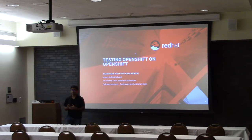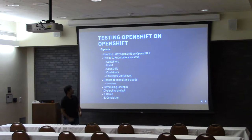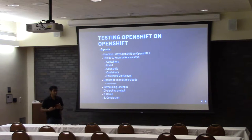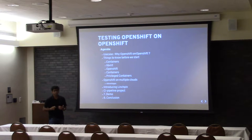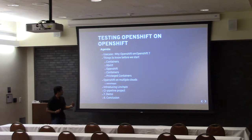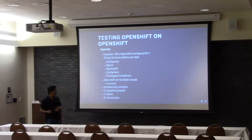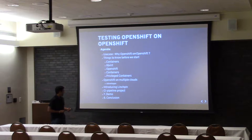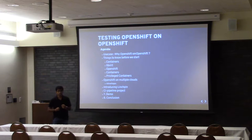CI Pipeline is part of the CentOS PaaS SIG community. Today we are going to discuss testing OpenShift on OpenShift as a use case, how it is feasible, why we need it, the basic terminology — containers, LibVirt, and OpenShift — privileged containers, differences between them, why we need OpenShift on multiple clouds, and how deployment is enabled by a tool called Linchpin. We'll have a short introduction to CI Pipeline, a demo, and then conclude.